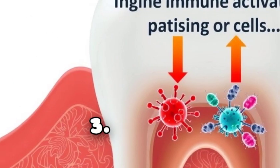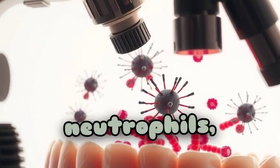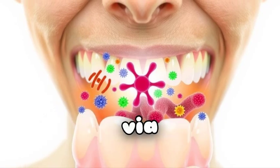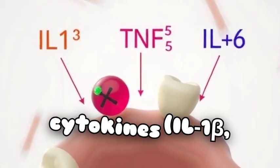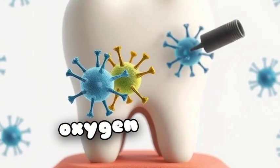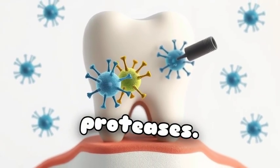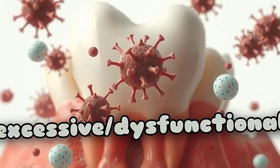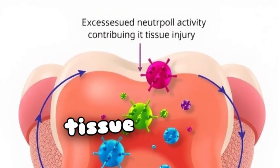Step 3: Innate immune activation. Epithelial cells, neutrophils, and macrophages detect bacteria via TLRs and complement. They release cytokines — IL-1β, TNF-α, IL-6 — reactive oxygen species (ROS), and proteases. Neutrophils attempt to contain infection, but excessive dysfunctional neutrophil activity contributes to tissue injury.